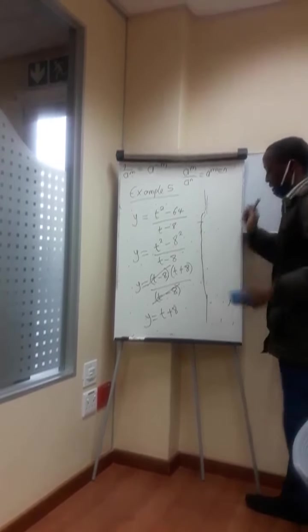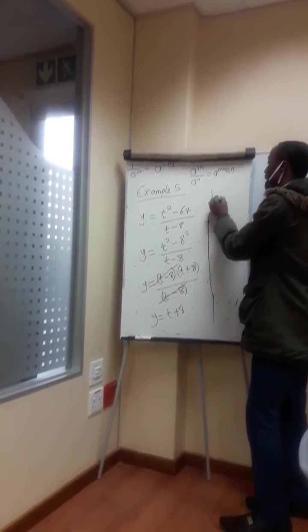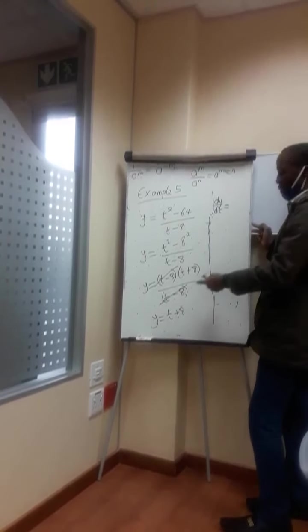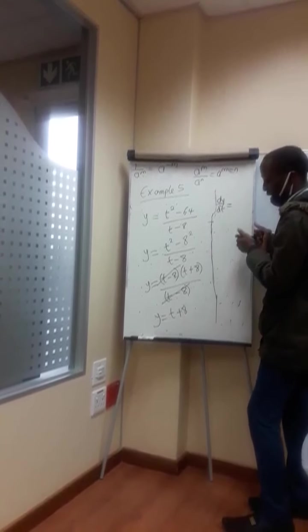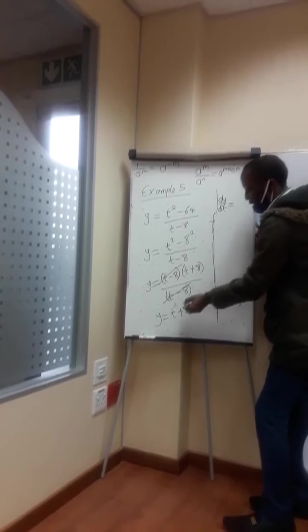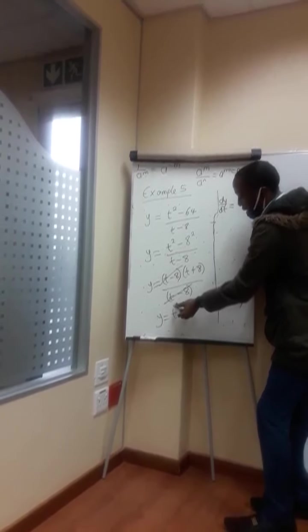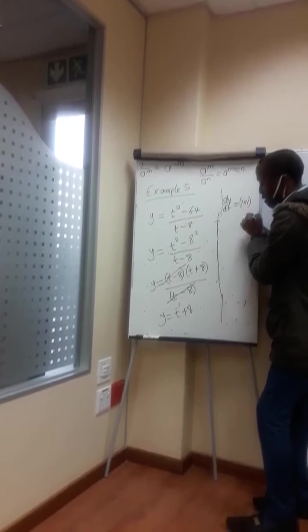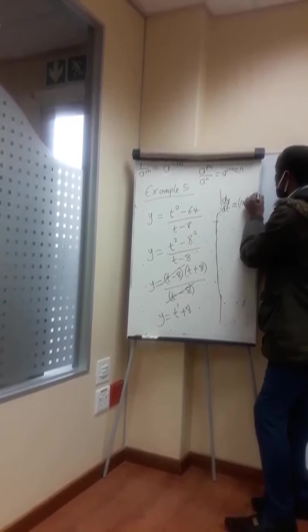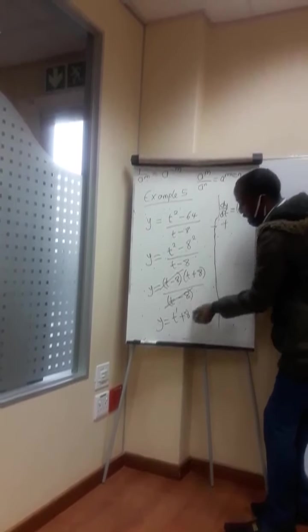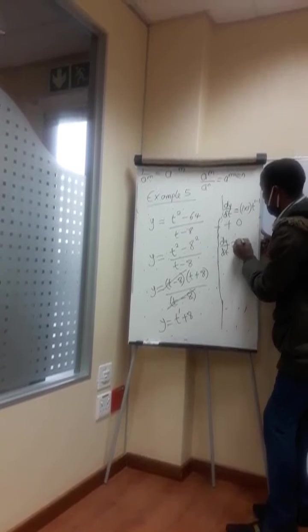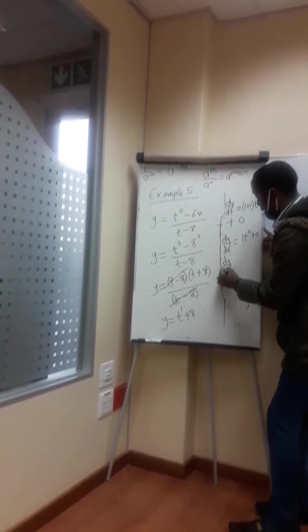Based on this, I just need to differentiate y equal to t plus 8. That means I need to find my dy/dt, differentiating y with respect to t — so it's not y with respect to x, it's y with respect to t. So dy/dt: this is t raised to the power 1, so when you differentiate t raised by 1, you take the value of the power, which is 1, multiply it by the coefficient of t, which is also 1, bring t raised by 1 back and subtract 1 from the power. Plus, when you differentiate 8, which is a constant, it becomes 0. So dy/dt becomes 1 times 1 times t raised by 0, plus 0.